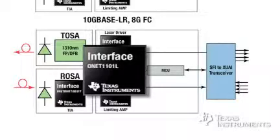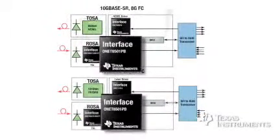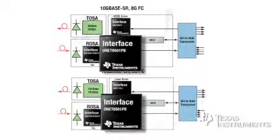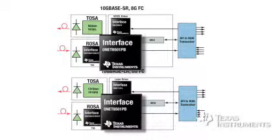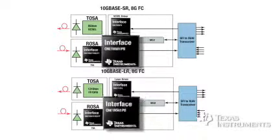On the receiving end, the O-Net 8501PB limiting amplifier has high dynamic range and ability to digitally modify the bandwidth, loss of signal, output amplitude and pre-emphasis.